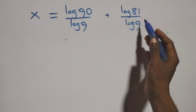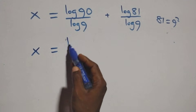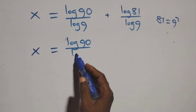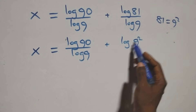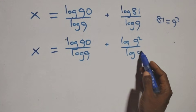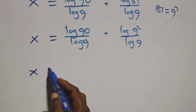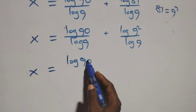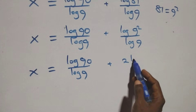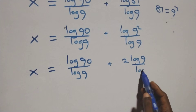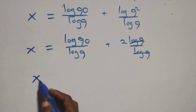The next step: we write eighty-one as nine squared. So we have x equals log ninety over log nine plus log nine squared over log nine. We apply the power rule of logarithms; the two comes out, giving x equals log ninety over log nine plus 2 log nine over log nine.